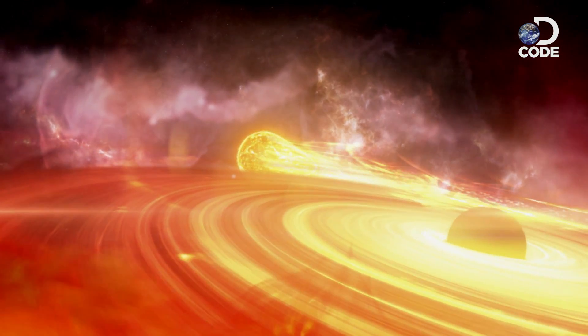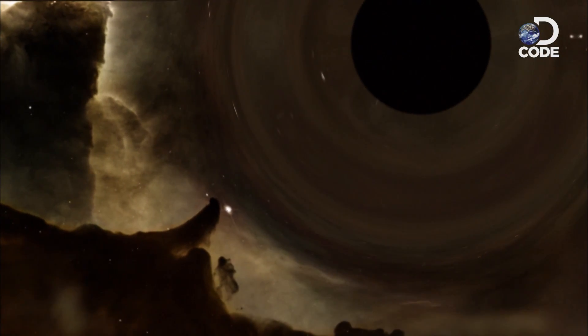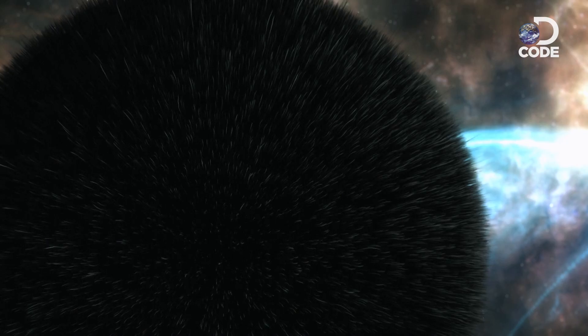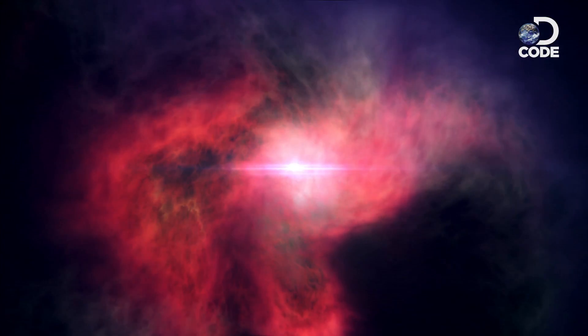We can't see black holes. We can only find circumstantial evidence of them. They violate the physics that predicts them. They may even be hairy. So do they actually exist?